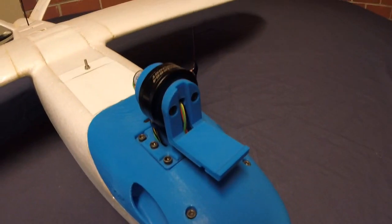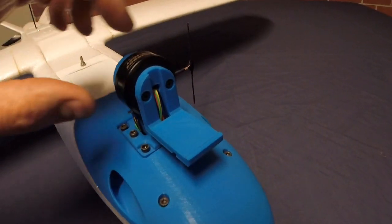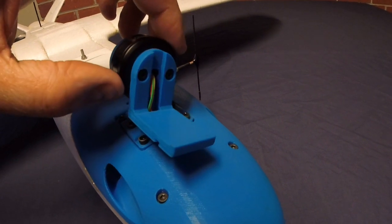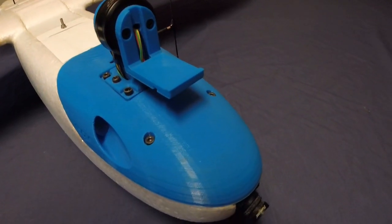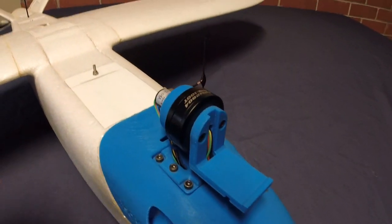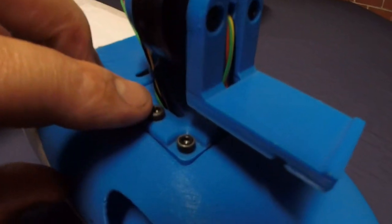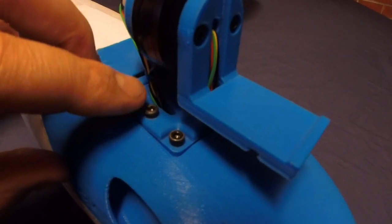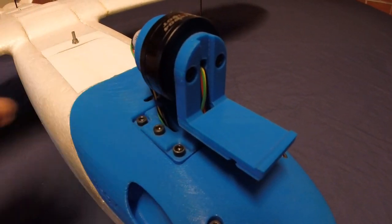The gimbal can face forwards or backwards. When I've got it in the forwards configuration like this, I get nice clean footage and there's no parts of the frame in shot. To swap it around, there are two mounting screws here. You take them out, twist the gimbal and then put the screws back in place.